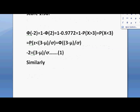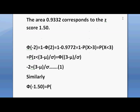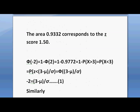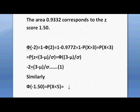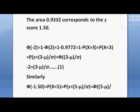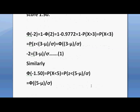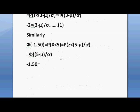Similarly, Φ(−1.50) equals probability x is less than 5, in the same manner as before. This equals probability z is less than (5 minus mu) divided by sigma. So minus 1.50 equals (5 minus mu) / sigma. We represent this as equation number 2.